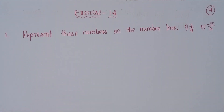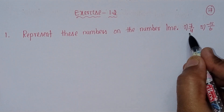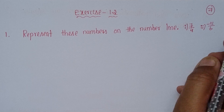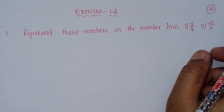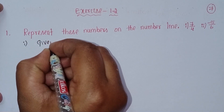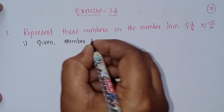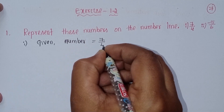My neighbors, this is Shahin, welcome back to Learn Something More YouTube channel. Today we will discuss Andhra Pradesh state 8th class mathematics, Chapter 1: Rational Numbers, Exercise 1.2, first problem. The given number is 7 by 4.